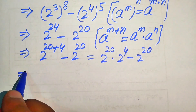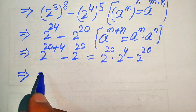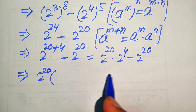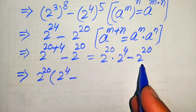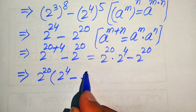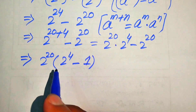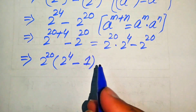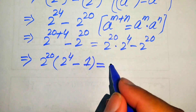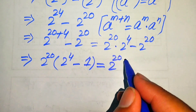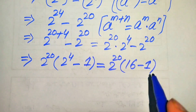Now, focusing on both terms, we see that 2 to the power of 20 is the common term. Factoring it out, the remaining values are 2 to the power of 4 minus 1. We know that 2 to the power of 4 equals 16, so we replace it and get 16 minus 1.